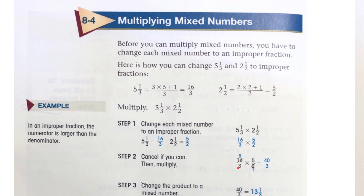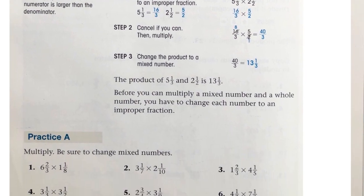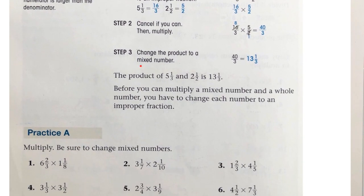3 and 5 do not have a common factor. 8 times 5 is 40. 3 times 1 is 3. Step 3, change the product to a mixed number by dividing the number on top by the number on bottom. Divide the numerator by the denominator.